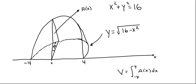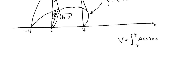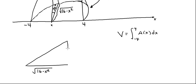This side right here is just the y-coordinate on the semicircle, which is the square root of 16 minus x squared. Now let's redraw this triangle outside of the wedge. One side has length square root of 16 minus x squared. This is a right triangle with an angle of 30 degrees, and let's call the other side A.